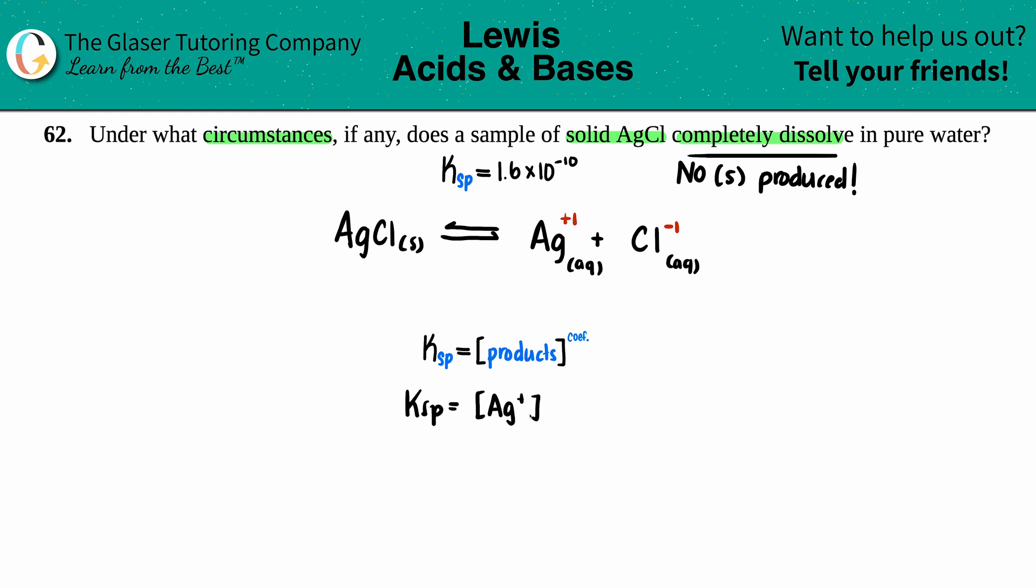So in our case the Ksp would just equal the concentration of Ag+ times the concentration of Cl-. No need to raise anything to any values here because there is just one of each, right? I have one Ag and one Cl-.